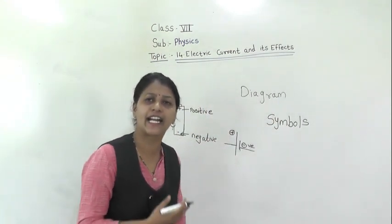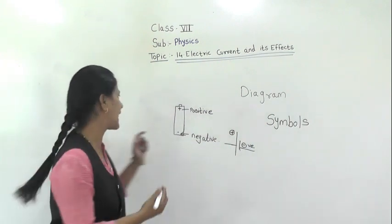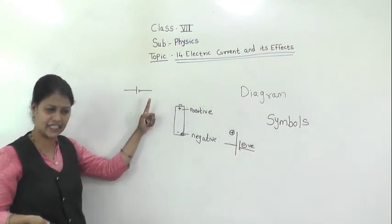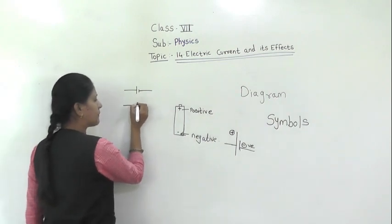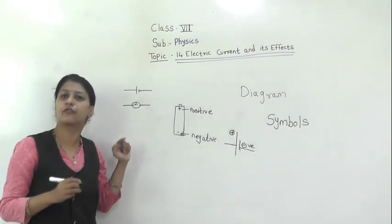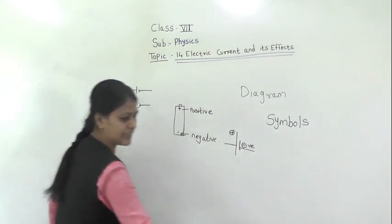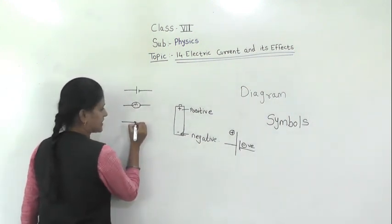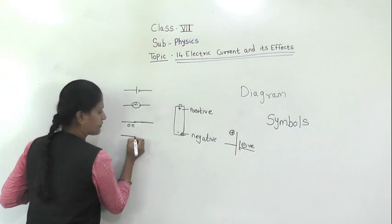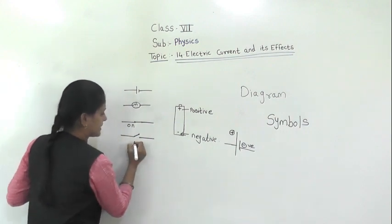There are different symbols for the electric components given in Table 14.1. For example, the cell — we indicate it with one longer line and one shorter line, that is positive and negative. Then for a bulb, to indicate a bulb we can use this symbol. To glow any kind of bulb we need a switch. The switch is indicated by a symbol: an on switch looks like this, and if we want to show the switch is off, we draw it like this.